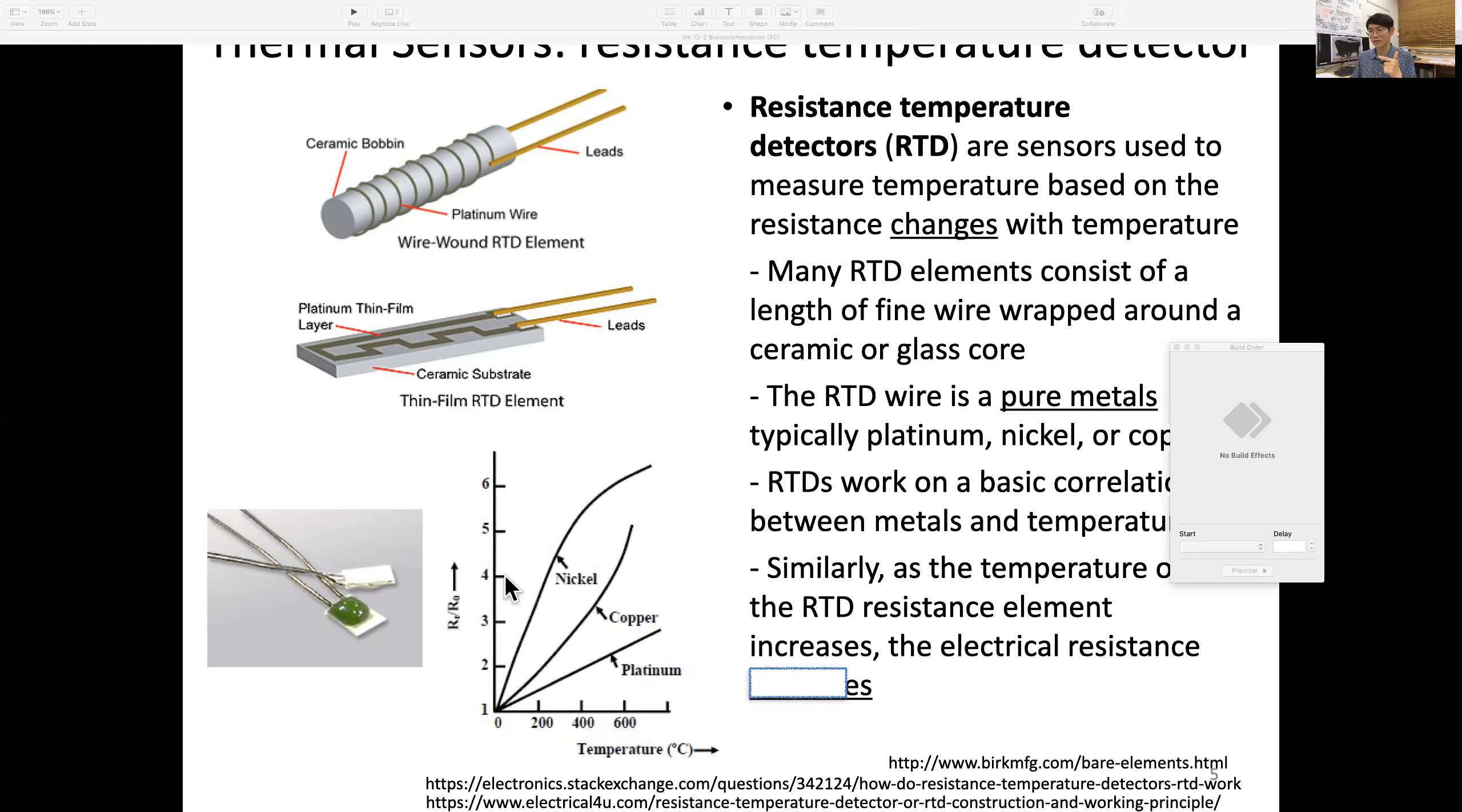Let's see the actual data. When temperature rises, the relative resistance also rises with platinum, copper, and nickel. As the temperature element increases, electrical resistance also increases.